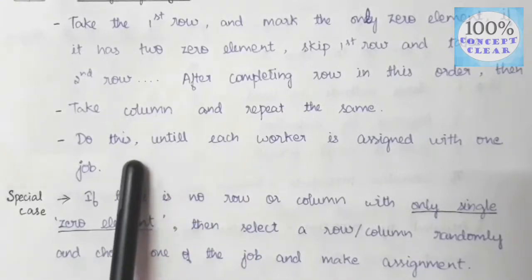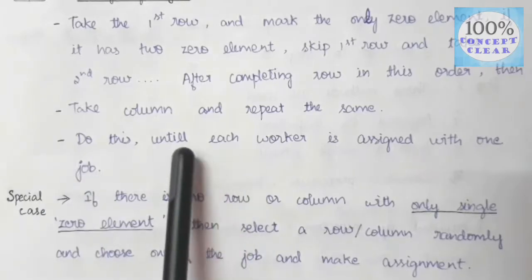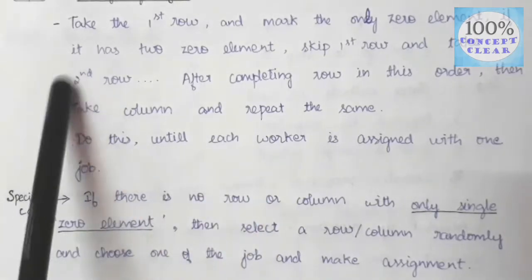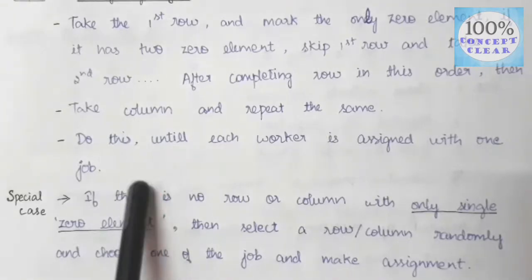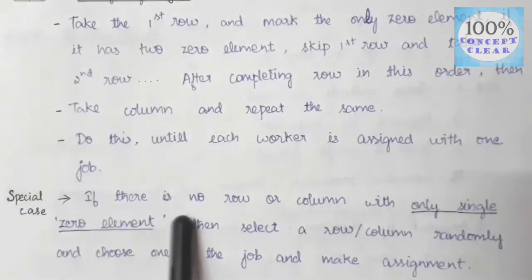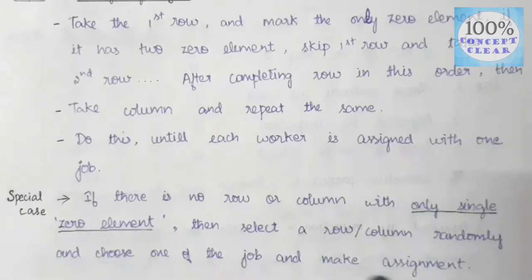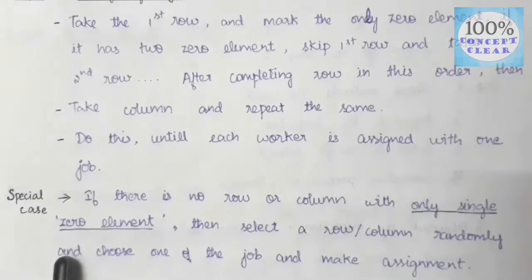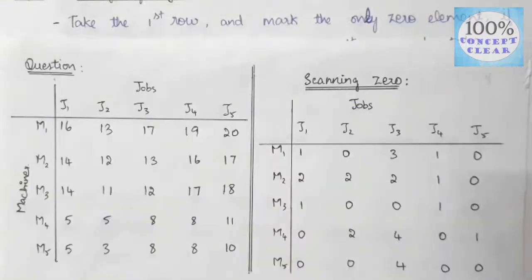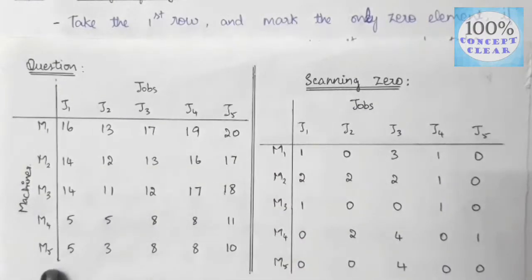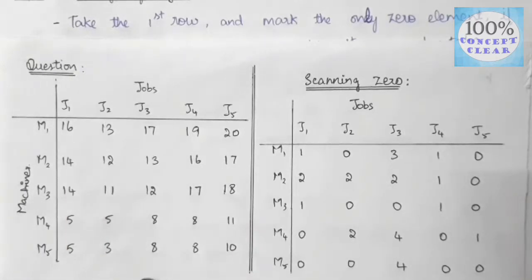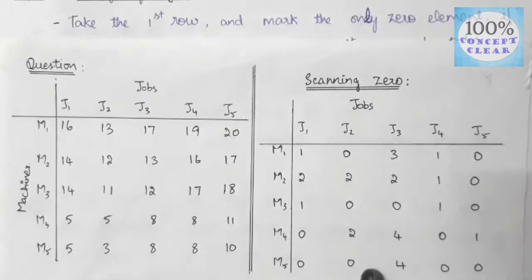Do this until each worker is assigned one job. If there is no row or column with only a single zero element, then select a row or column randomly and choose one of the jobs and make an assignment. Let's go through an example to make this clear. The last step: we are going to assign jobs.